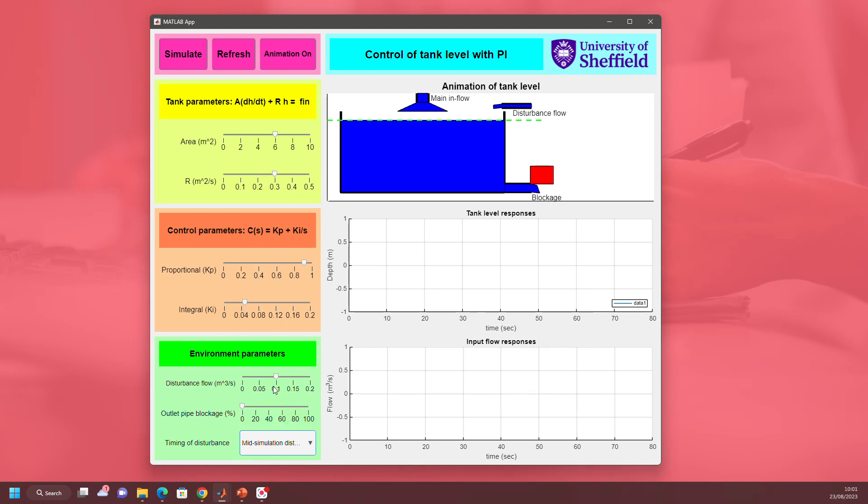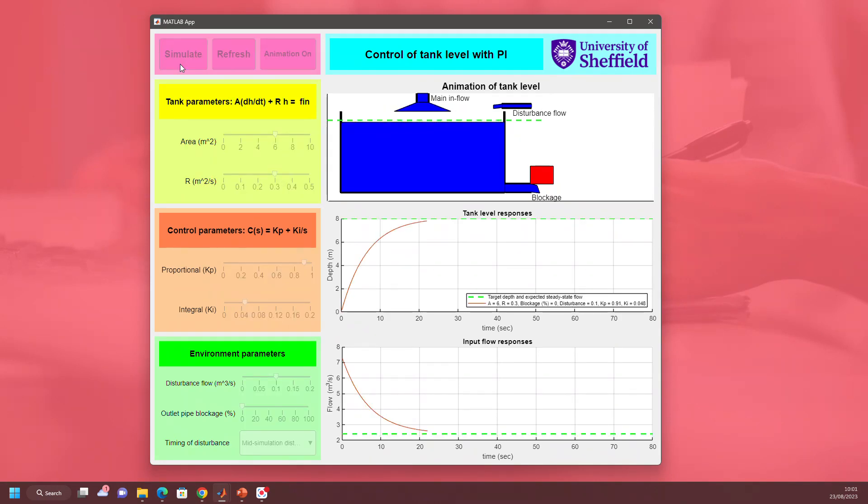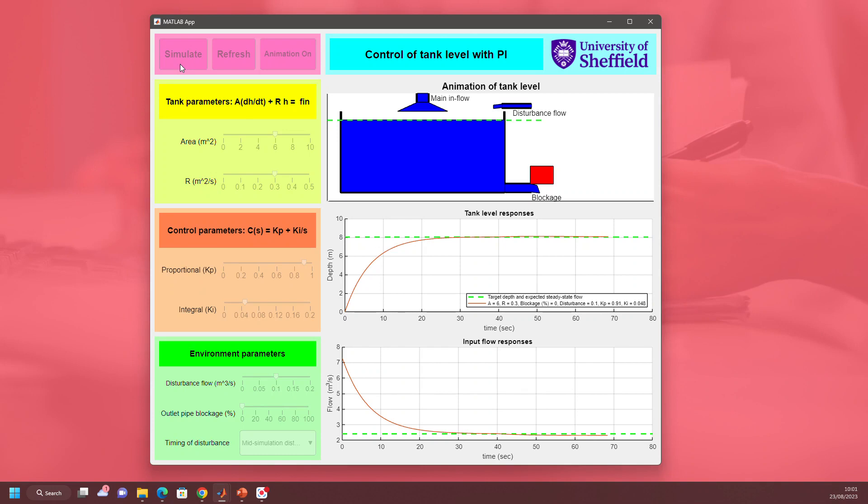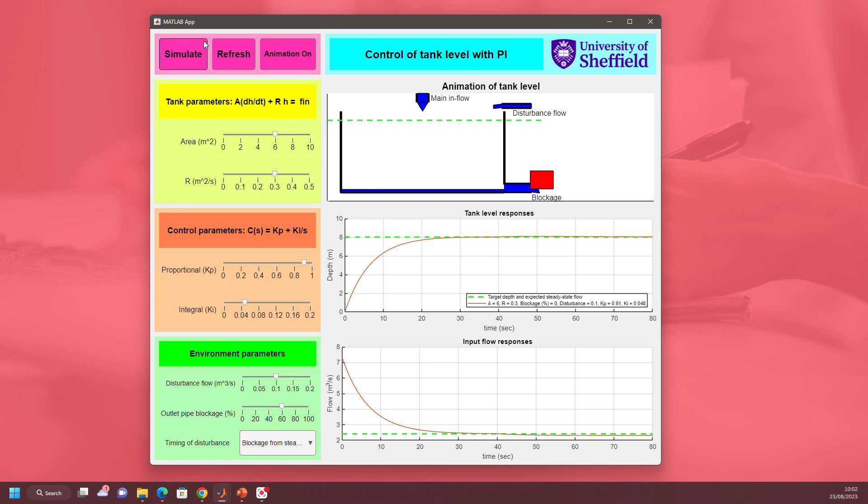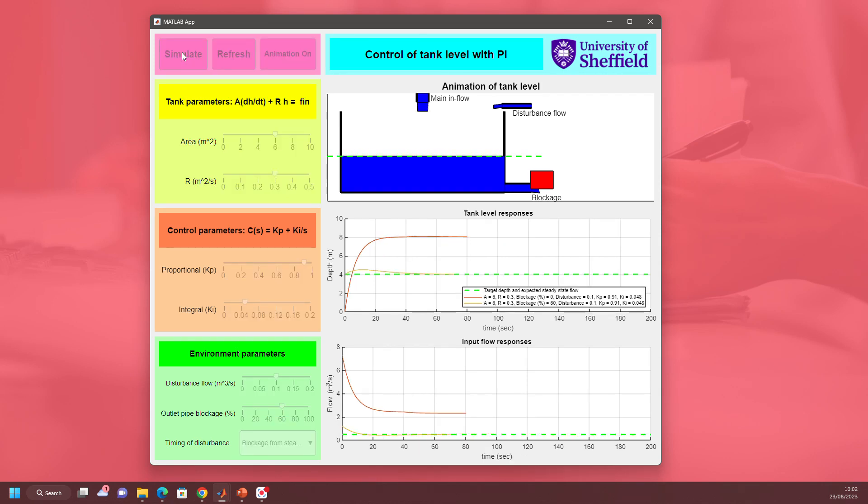You can change the design timing of the disturbances. Now the disturbance will come in mid-simulation and you're interested in how well the system reacts to that disturbance. You can see here there's a very slight change when the disturbance comes in. You can also do the blockage from steady state. Everything's going fine, we're at steady state, then we introduce a blockage, and you can see how the system has responded to that blockage. It's rejected it quite well, so maybe this PI compensator isn't too bad.